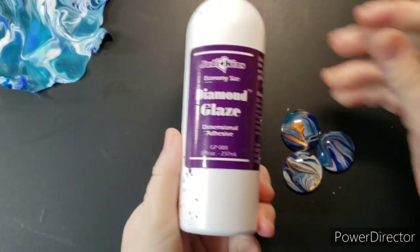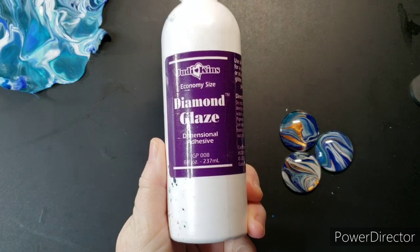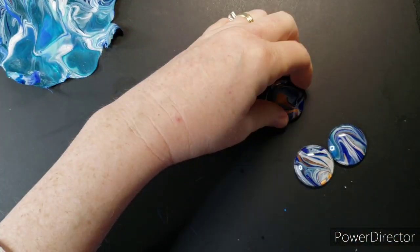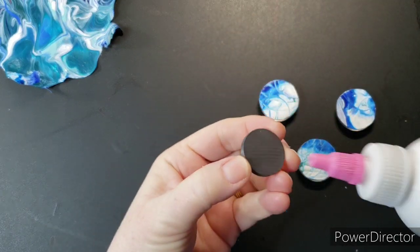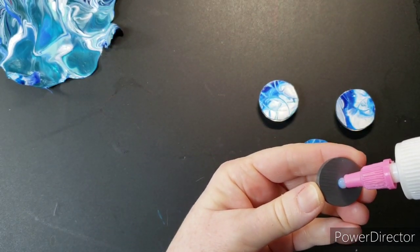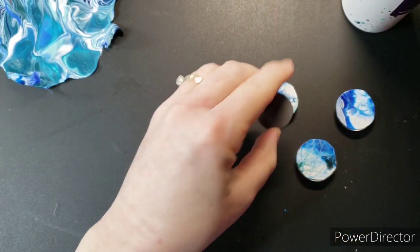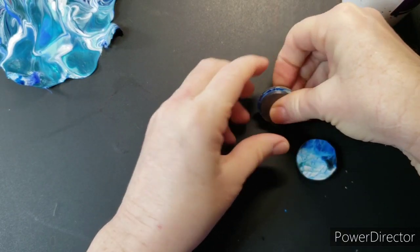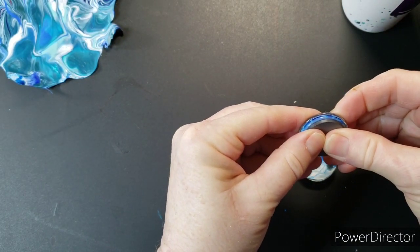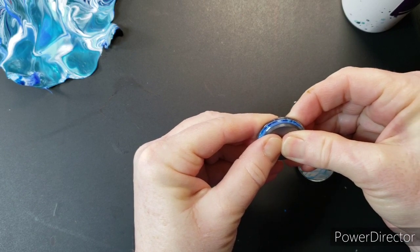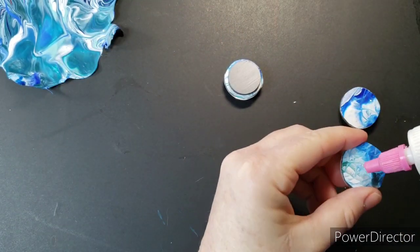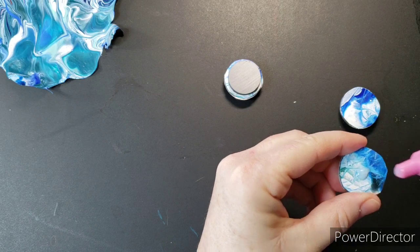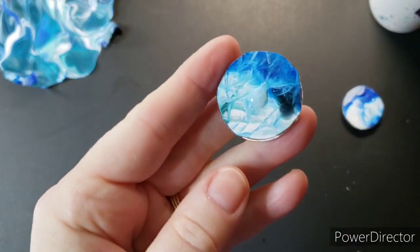Then I use this diamond glaze to attach all the magnets. It just takes a little bit because it does spread out. Push it on there, you see how little I'm putting on there?